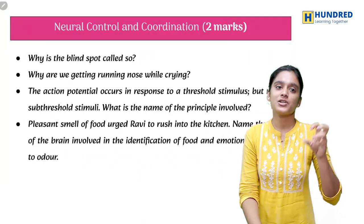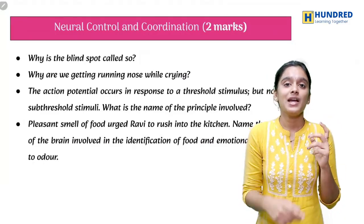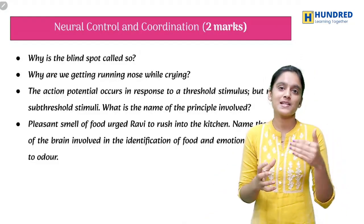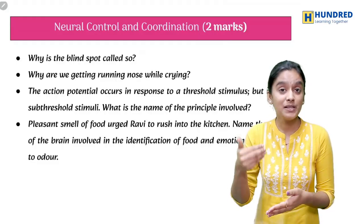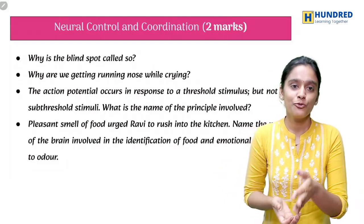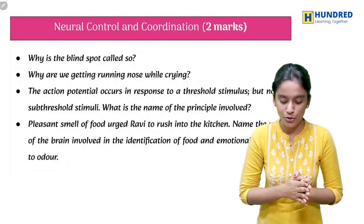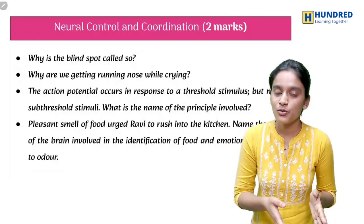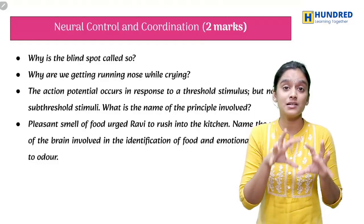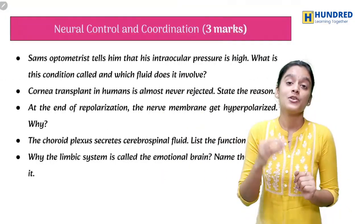Next, Neural Control and Coordination. The 2-mark questions are very important, and you will have case-based study questions to expect. For example: the smell of food urges Ravi to rush into the kitchen — name the parts of the brain involved in the identification of food and emotional responses to odor. These are case-based questions you should expect in this chapter. You should understand these rather than memorize them.